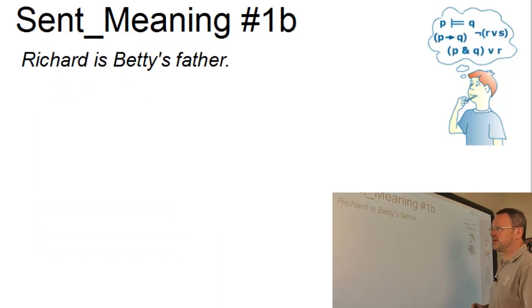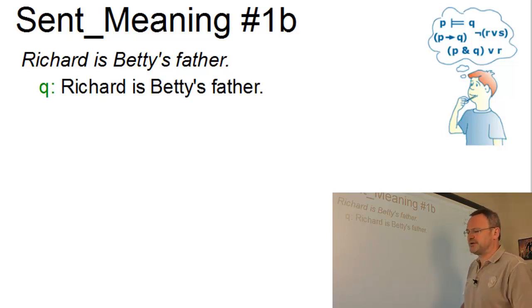Here is the second example. Richard is Betty's father. Again, the sentence exhibits one proposition. Let's call it Q this time.